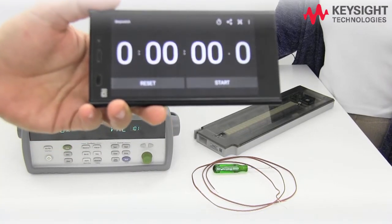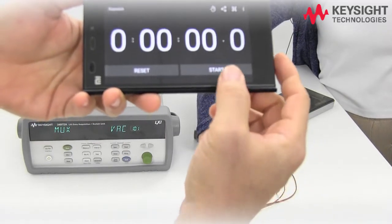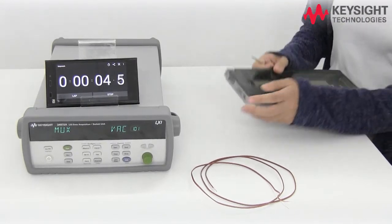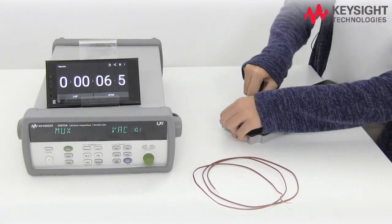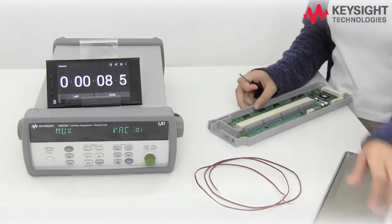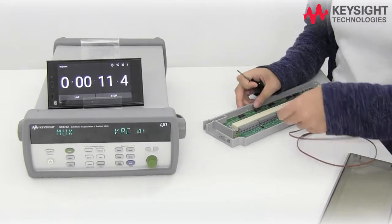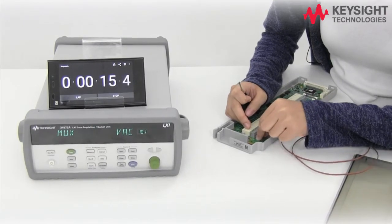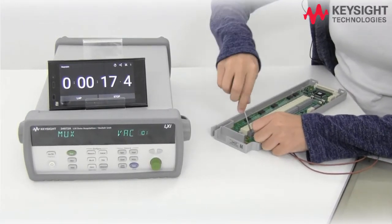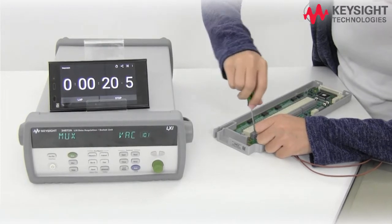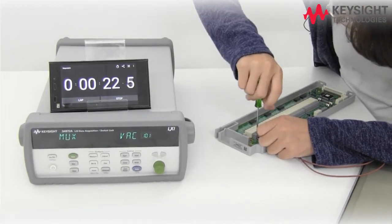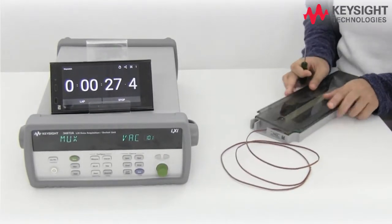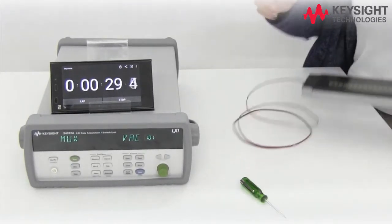Here we have the general purpose MUX card, the 34901A. Open up the cover. Now we want to connect the J-type thermocouple to channel number one. The white wire goes to high, screw this in. The red wire goes to low. Now close up the cover.